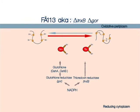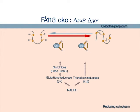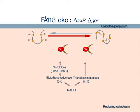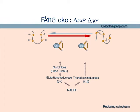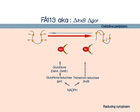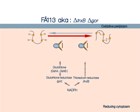Glutaredoxins, together with thioredoxins, are the main reducing enzymes in the cytoplasm and reduce any disulfide bond formed. These two pathways are redundant and are responsible for maintaining the proteome in a reduced state. Knocking out one pathway does not lead to lethality, as the other pathway is sufficient for cell viability.